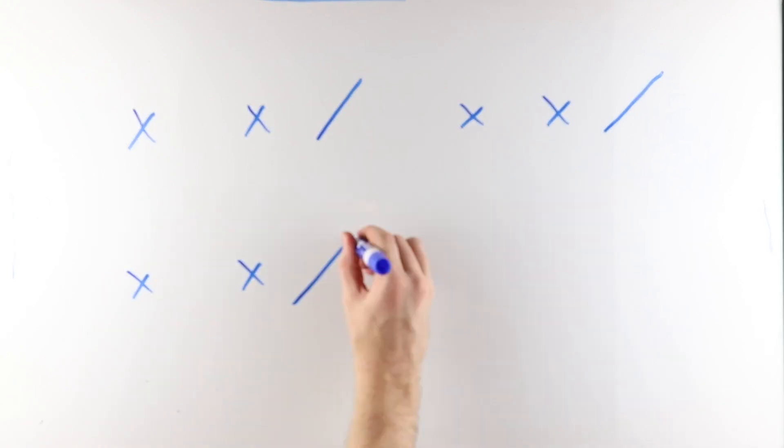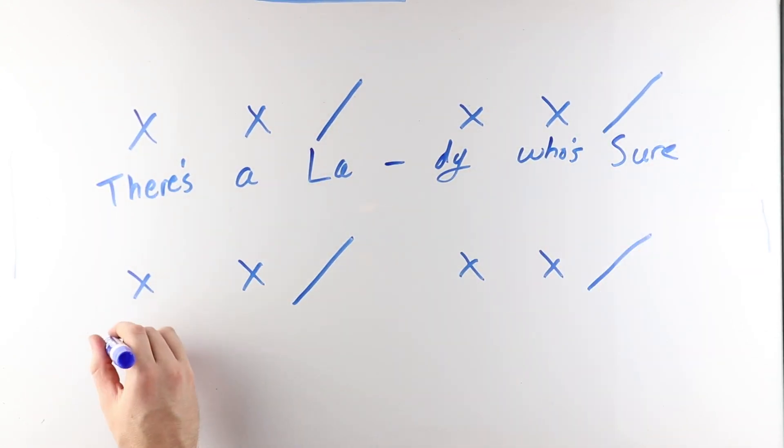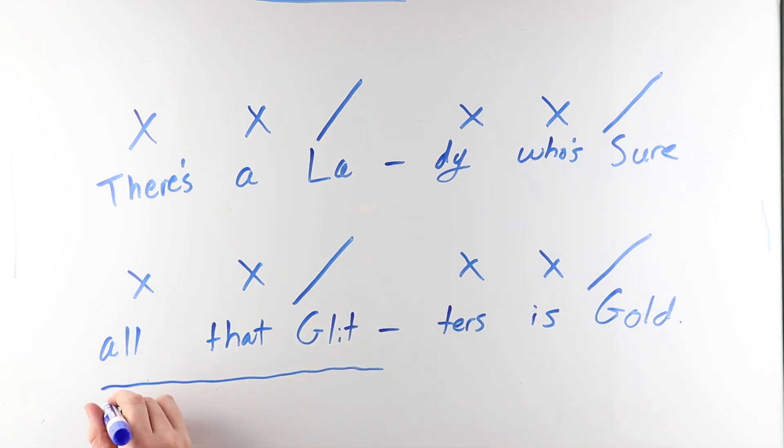The verses in the first portion all follow the same rhythm. The lines are based on an anapestic foot, two unstressed syllables, and one stressed syllable. There's a lady who's sure all that glitters is gold.